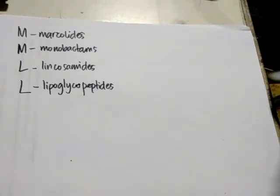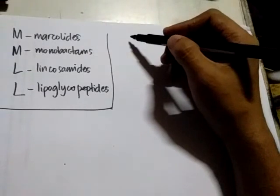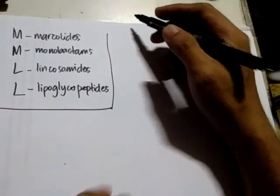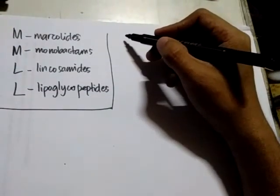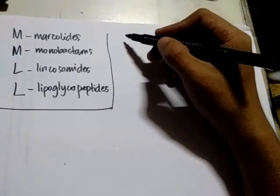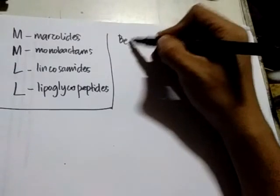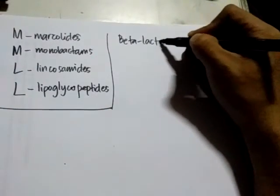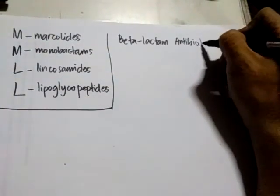First, let me introduce another very important reclassification of antibiotics: the beta-lactam antibiotics. Before we discuss penicillin from the PAKSTOP group, there is something important. Your beta-lactam antibiotics — there are four of them.